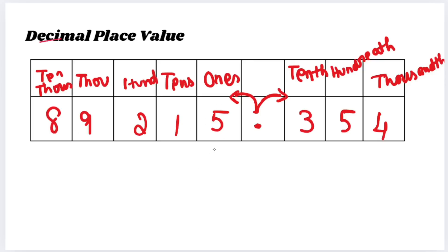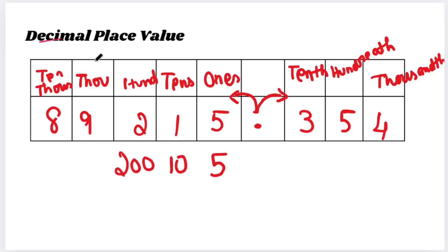How to write this? In the ones place, there are no zeros, so we write it as it is. In the tenth place, there is one zero — write the number and add one zero. In the hundredth place, there are two zeros — write the number and add two zeros. In the thousandth place, three zeros. In the ten-thousandth place, four zeros — so that's 4 zeros.